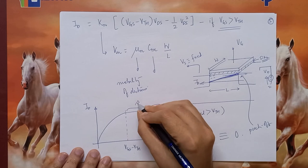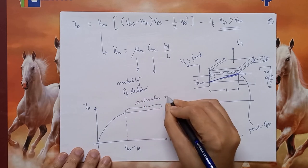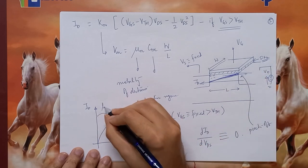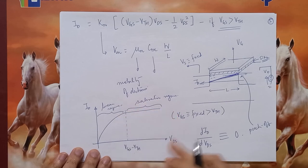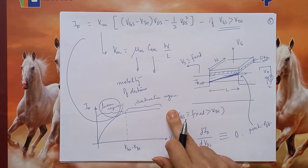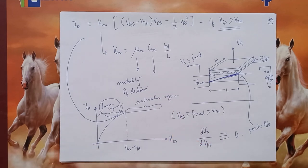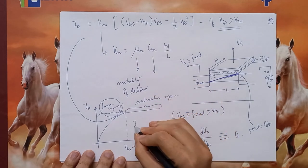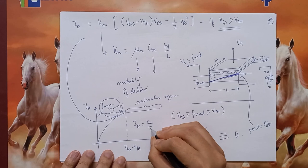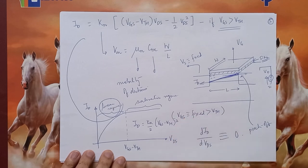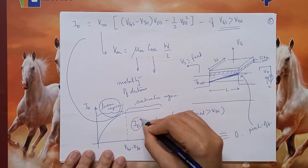After pinch-off, if you increase Vd further, the current does not change — it becomes essentially constant. Carriers still shoot through but cannot increase in number; it is like a road where part is blocked and only one lane remains. This region is called the saturation region, whereas the part before pinch-off is the linear region. The linear region equation is not valid in saturation; in saturation, substitute Vds = Vgs − Vth to get: ID = (Kn/2) × (Vgs − Vth)².